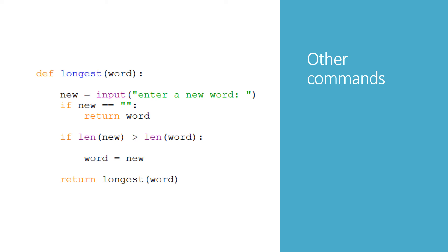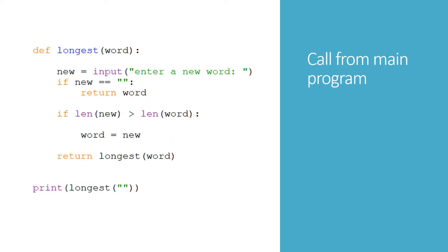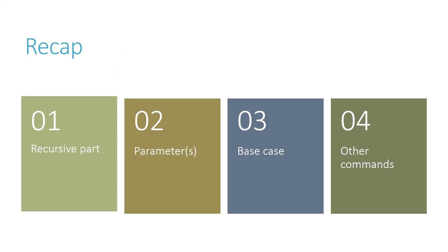We'll call it from the main program. Remember, we need to call it with a parameter, and my parameter is just an empty string. To recap: when we write a recursive function, we write the recursive part, we add some parameters, we make sure there's a base case, and then we put in any other commands we need to make the function do its job.